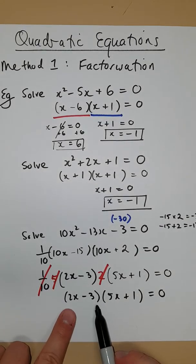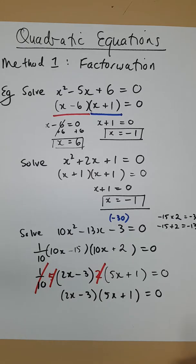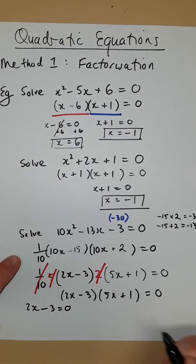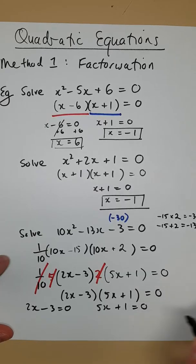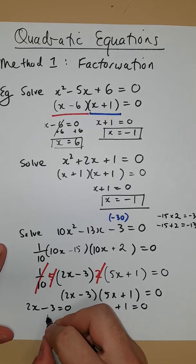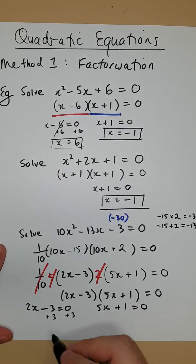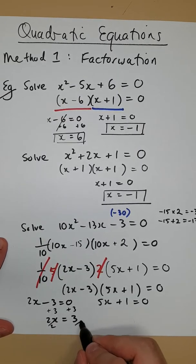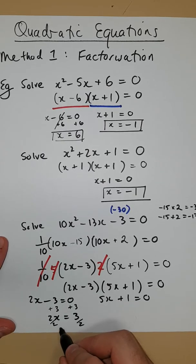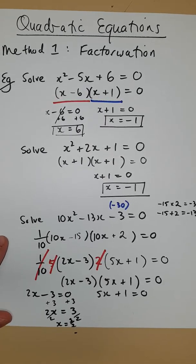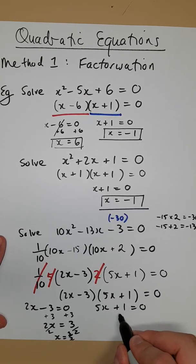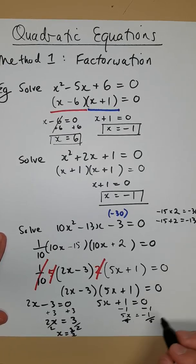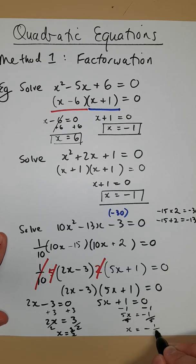So again, the situation is that either this bracket is equal to 0, or this bracket is equal to 0. So we'll write the two resulting equations from that. We're going to have 2x minus 3 is equal to 0, or 5x plus 1 is equal to 0. And we just need to solve each of these. So we're going to add 3 to both sides, which results in 2x equals 3. Alright, then we're going to divide both sides by 2. And we end up with, I'm running out of room here, but x is equal to 3 over 2. Alright, this time we're going to subtract 1 from both sides. We'll end up with 5x equals negative 1. We'll divide by 5, and we end up with x is equal to negative 1 fifth.